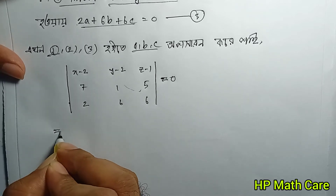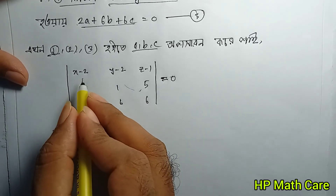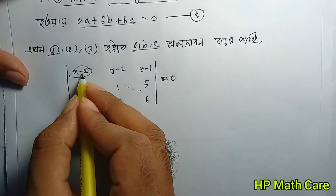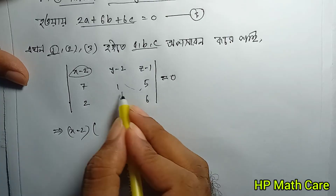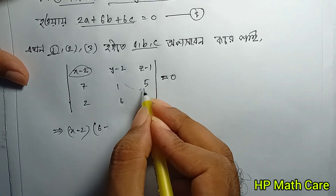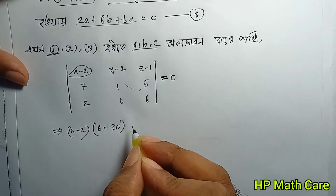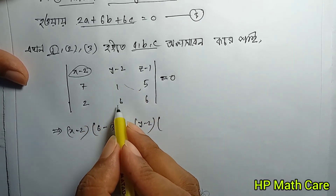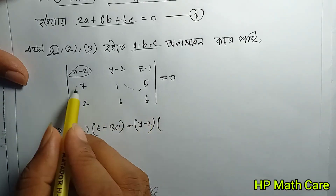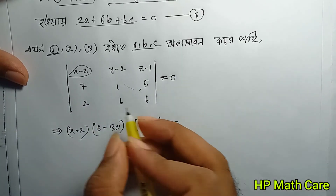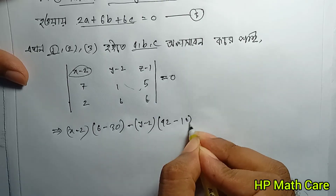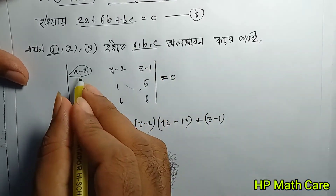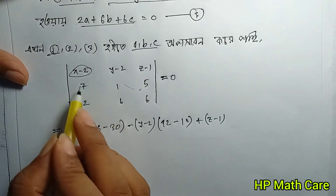Measure the values: y minus 2, then we have a column to see 4, so we have 32 minus 2. And z minus 1, that's why we have a column to see 4 and so we have 32 minus 2.